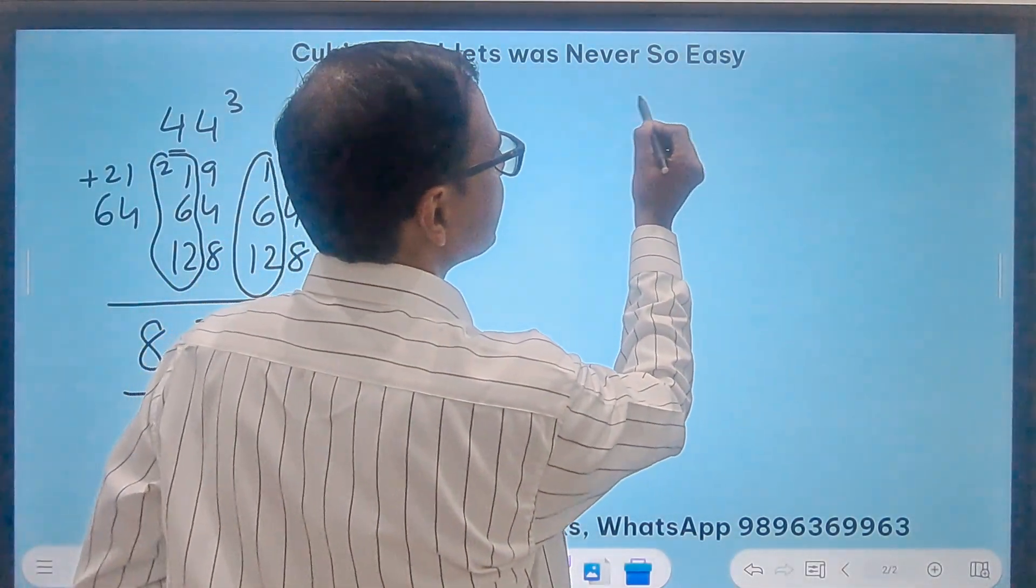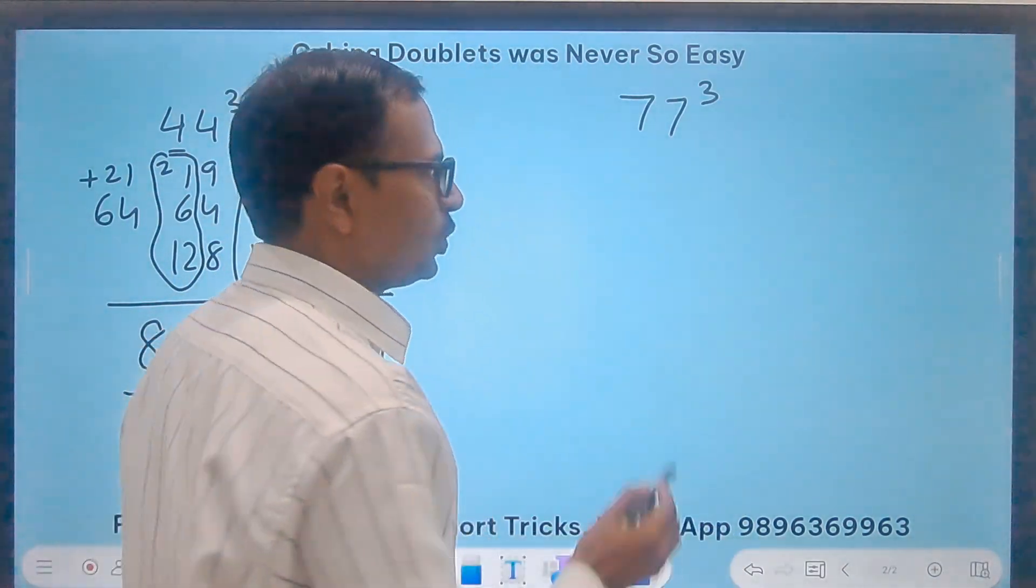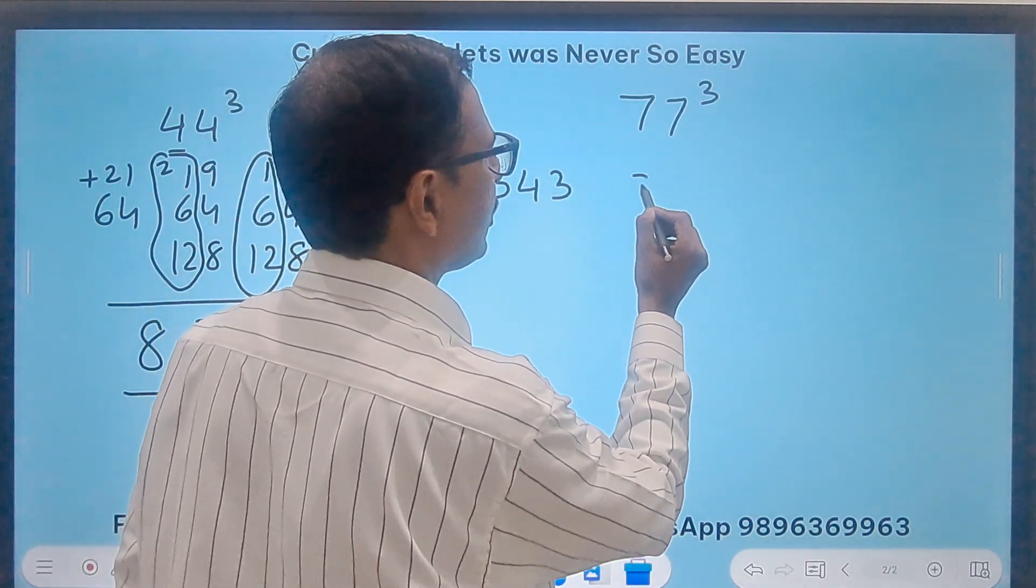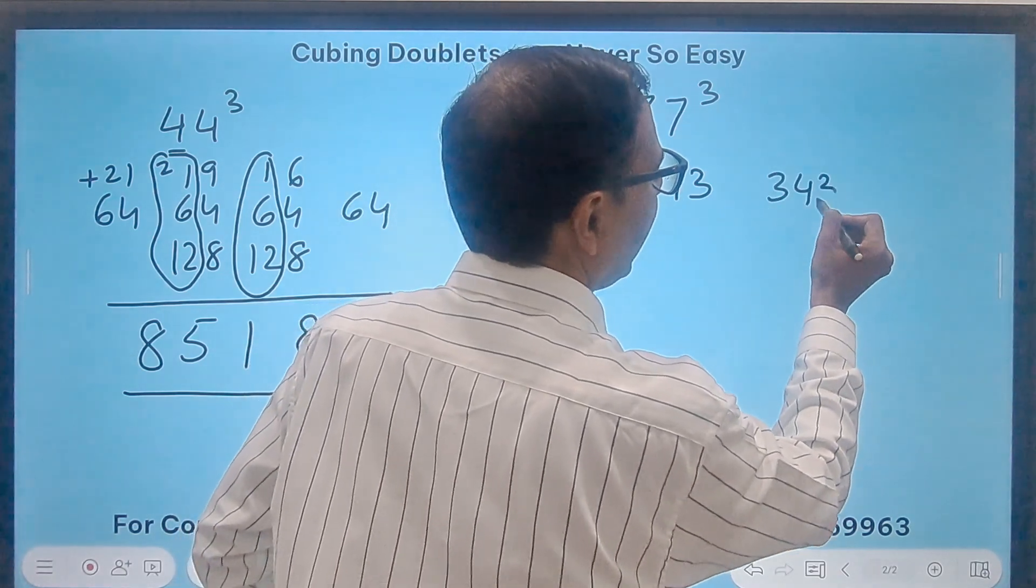One more example of an odd number. Say 77 cube. 7 cube. That's what you need to know. 7 cube is 343. So let's write 343, 343, 343 and 343.